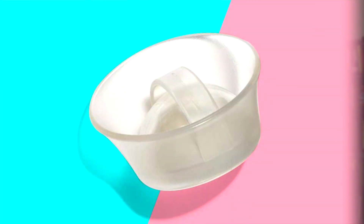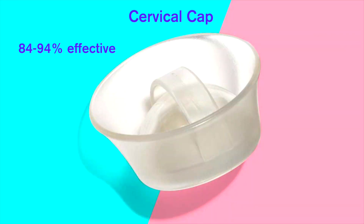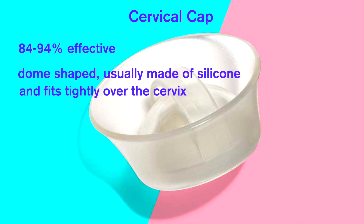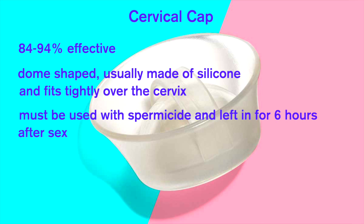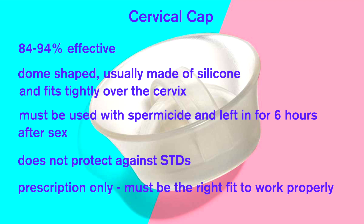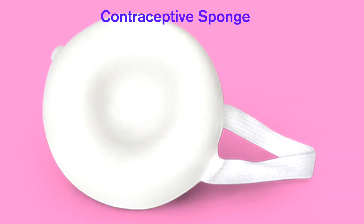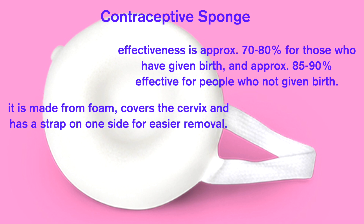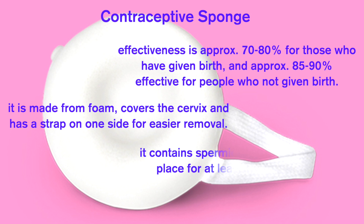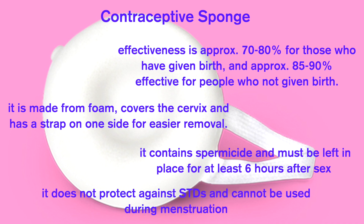The next form of barrier method birth control is the cervical cap. The cervical cap is 84–94% effective. It is dome-shaped and fits tightly over your cervix. It should be used with spermicide and does not protect against STDs. It is prescription only because it must be the right size and fit to work properly. Next is the sponge, which is 70–80% effective. It's made of foam, covers the cervix, and contains spermicide. It must be left in place for six hours after sex, does not protect against STDs, and should not be used during menstruation.